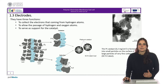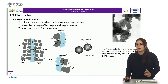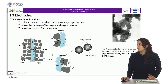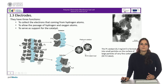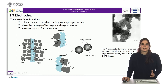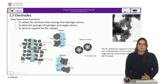In fact, the catalyst is on the surface of the carbon particle XC72 Cabot. In this way, with less quantity of catalyst, the same contact surface with gases is achieved.